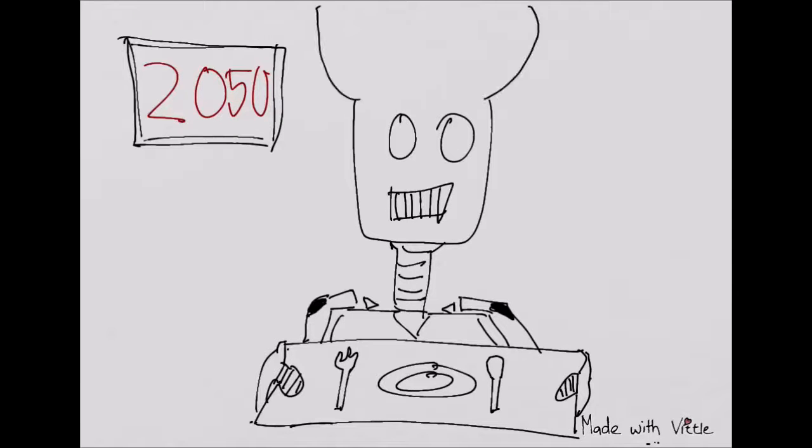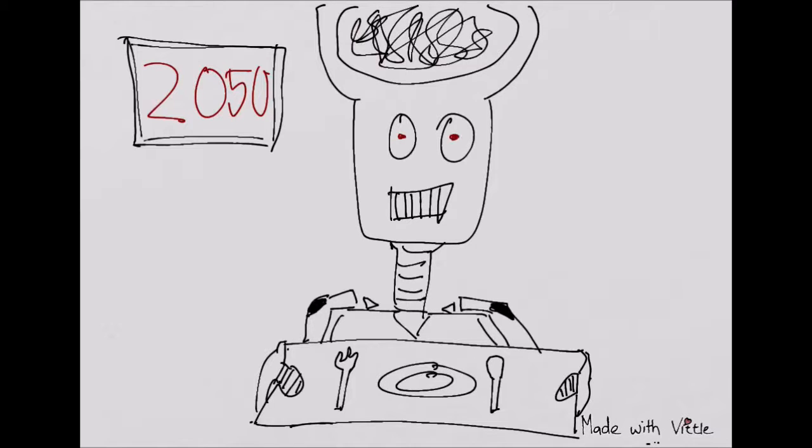In the future, a robot may be serving you lunch at the food court. The CEO explained that machines will replace traditional labour. This is all about artificial intelligence and how much faster it can process.